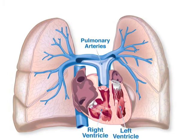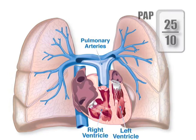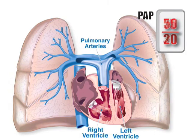In pulmonary hypertension, there is abnormally high blood pressure in the pulmonary arteries, which is also known as high pulmonary artery pressure, or PAP.